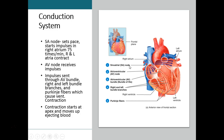To trace that pathway: the SA node begins depolarization, that wave spreads through both atria via gap junctions to the AV node, then the AV bundle branches into right and left bundle branches going down to the apex, and then smaller Purkinje fibers go out to depolarize the rest of the myocardium, leading to ventricular contraction.